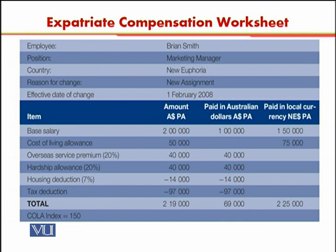Finally, there is a tax deduction — something to be discussed in detail in later topics covering how tax is calculated and compensated in various situations. The tax savings that the person receives by working in the host country are deducted from his salary, amounting to $97,000. This is deducted from the Australian dollar column of his payment.